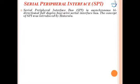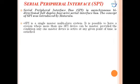The second onboard communication interface is the Serial Peripheral Interface (SPI). The SPI bus is an asynchronous, bidirectional, full-duplex, four-wire serial interface bus. The concept of SPI was introduced by Motorola. SPI is a single-master, multi-slave system with only one master and potentially multiple slave devices. It is possible to have more than one SPI device act as a master, provided only one master is active at a given point of time.